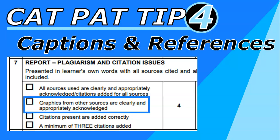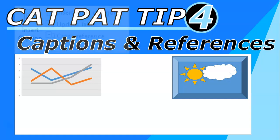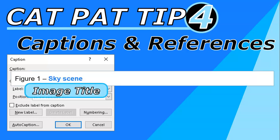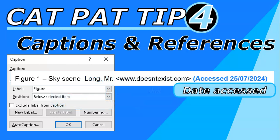People often lose marks on graphics because they forget to acknowledge them. Not all graphics will be charts — some will be images from online. To reference them, go to References, Insert Caption. You can specify whether it's a figure, chart, or table. Put in the title of the picture, and then include the creator or photographer, the URL, and the date you accessed it. If you forgot where you found the image, you can do a reverse image search in Google — there's a video showing how to do that.